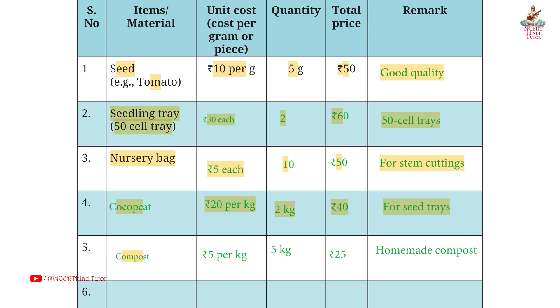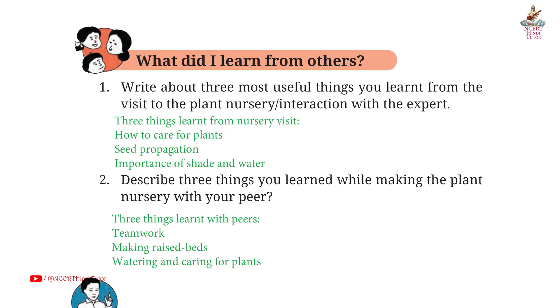Fifth: compost. Unit cost: Rs. 5 per kg. Quantity: 5 kg. Total price: Rs. 25. Remark: homemade compost.